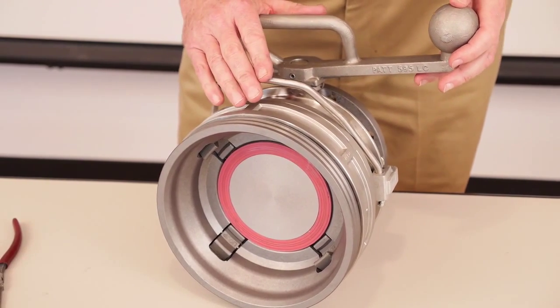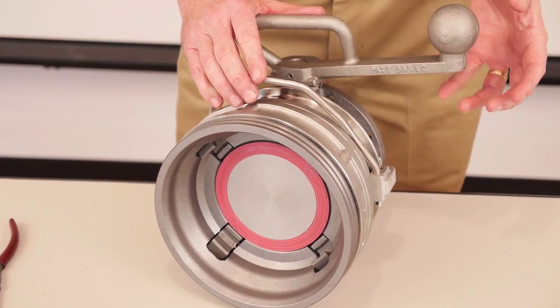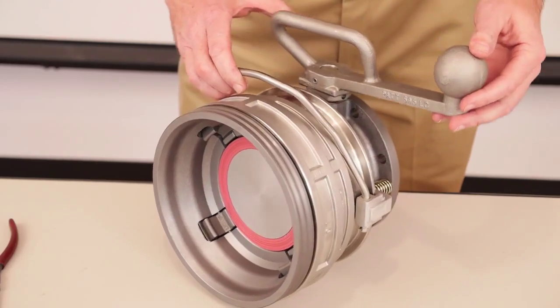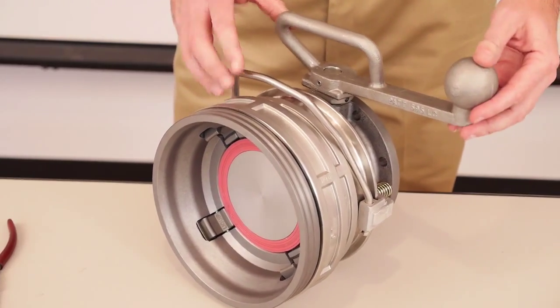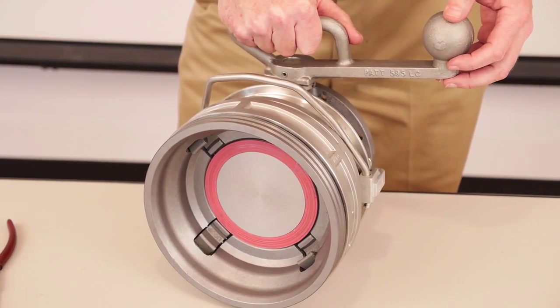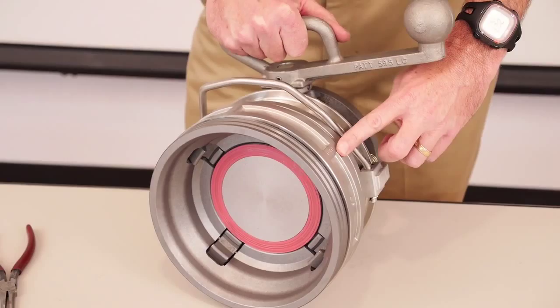So now that we're done with maintenance, you can see how simple and easy it is to replace all the seals quickly in the API 700 series coupler. A few notes on this coupler now that we're finished. You'll notice we have an ergonomic handle for smooth operation. We have this stainless steel outer collar for long life.